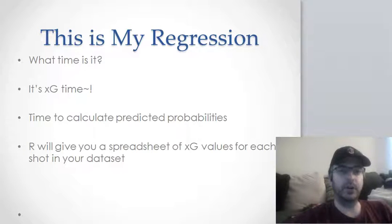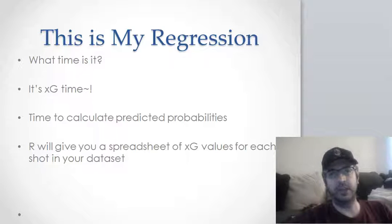This is all it is: you run a regression, plug all your explanatory variables into the model, let the computer calculate each of their effects on the likelihood of scoring a goal, run the predict function, it spits out xG values, you save them in a spreadsheet - life is good.